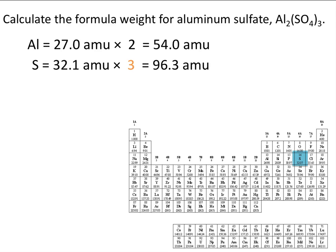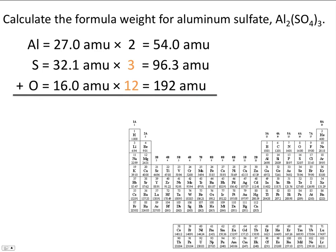Looking at our periodic table, we see that the atomic weight for sulfur is 32.1, times 3, to give us 96.3 AMU for the total sulfur contribution. Because there are four oxygens in the parentheses and the subscript outside is three, we take three times four to give us 12 total oxygen atoms in the formula. The atomic weight of oxygen is 16, times 12, which gives us 192 AMU. When we add the sum of all atomic weights together, we come up with a formula weight of 342 AMU for aluminum sulfate.